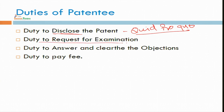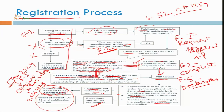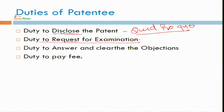You also have a duty to request for examination. As we have done earlier, within 48 months from date of priority, you have to give request for examination. You have to keep on checking the status of your application, how your application is proceeding — you can also request for the examination. Request for examination within 48 months from the date of priority, i.e., from the date of filing of application with provisional specification.